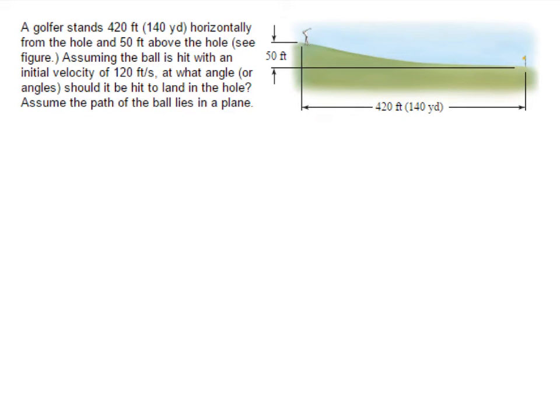Here's the problem I'll work through. We've got a golfer standing 420 feet horizontally from a hole and 50 feet above the hole, so standing up on a hill trying to hit the ball into the hole. The initial velocity of the ball is 120 feet per second, and we want to know what angle should the ball be hit so that it lands in the hole.